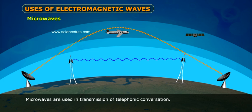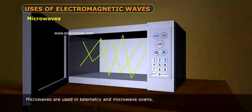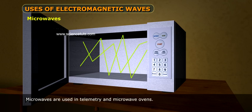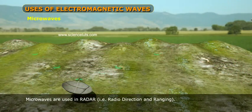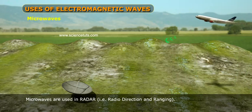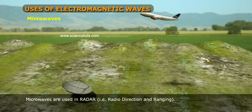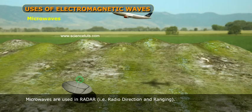Microwaves are used in transmission of telephonic conversation. Microwaves are used in telemetry and microwave ovens. Microwaves are used in radar, that is, radio direction and ranging.